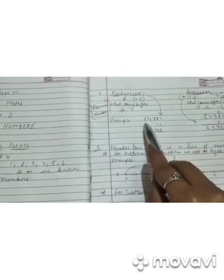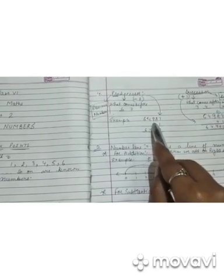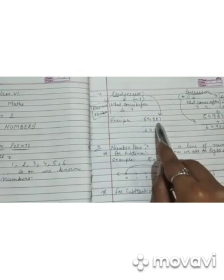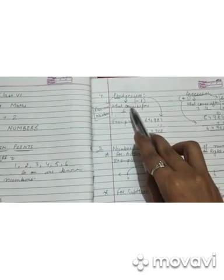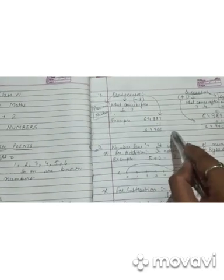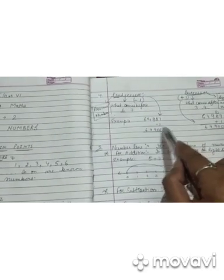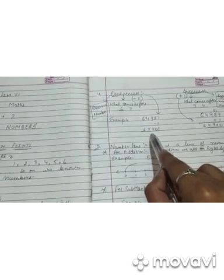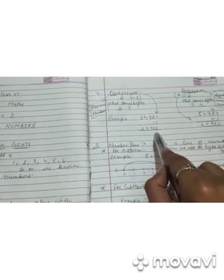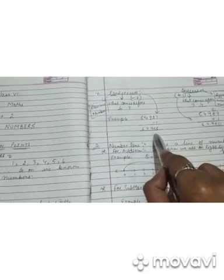Example लेके चलते हैं: 64987. अब हमें predecessor निकालना है, तो 1 minus करेंगे। 1 minus करके हमारे पास answer क्या आएगा? 64986.